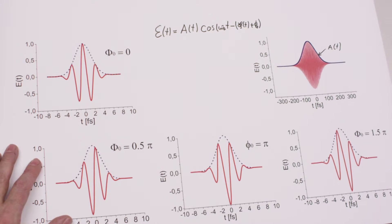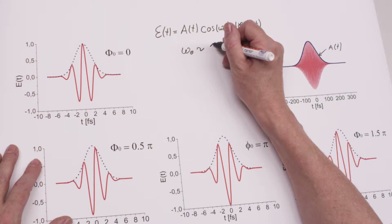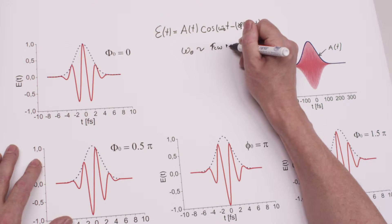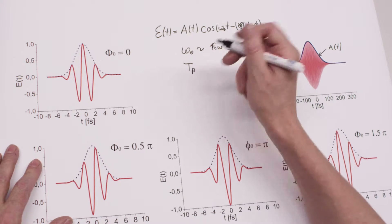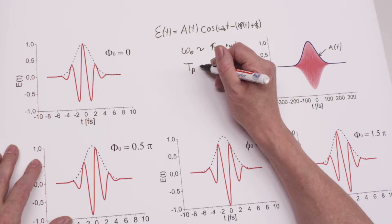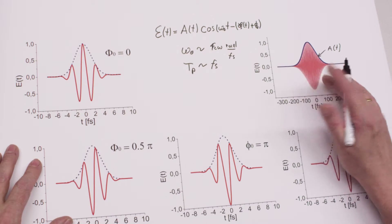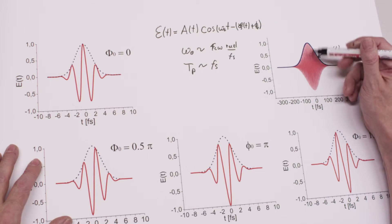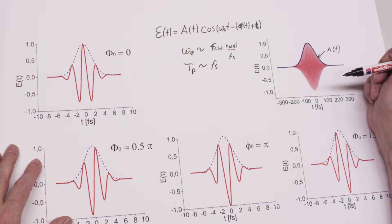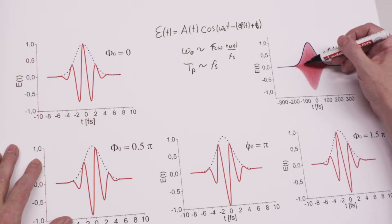...then the amplitude function spans many cycles. The carrier frequency is of the order of a few radians per femtosecond, which means that a full oscillation of the carrier corresponds to roughly a femtosecond. When we consider that pulse envelope, it extends over more than 50 cycles and it doesn't matter what carrier envelope phase we have — it always looks the same.